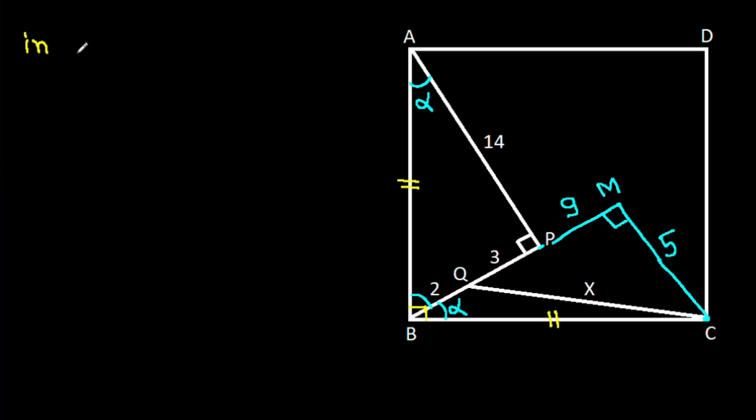Now, in triangle CMQ, this angle is 90 degrees, CM is 5, MQ is 9 plus 3, that will be 12.